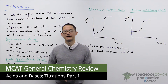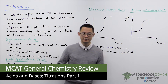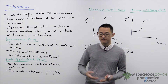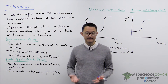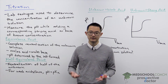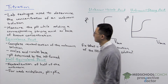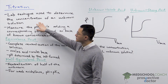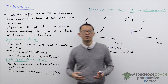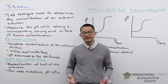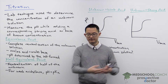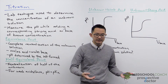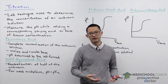In this video we're going to talk about titrations. Titrations is a common laboratory technique that shows up on the MCAT exam. Many of you have probably done this technique yourself in your general chemistry laboratories. Titrations is a laboratory technique used to determine the concentration of an unknown solution. The idea is that in the lab someone left a beaker of a solution and instead of just pouring it down the sink you want to dispose of it properly.